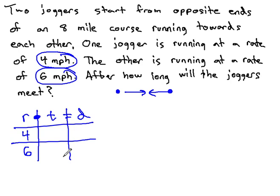We want to know after how long will the joggers meet. We don't know the amount of time they're traveling. We do know they're traveling at the same time, though, so let's use the same variable t for both of their times.